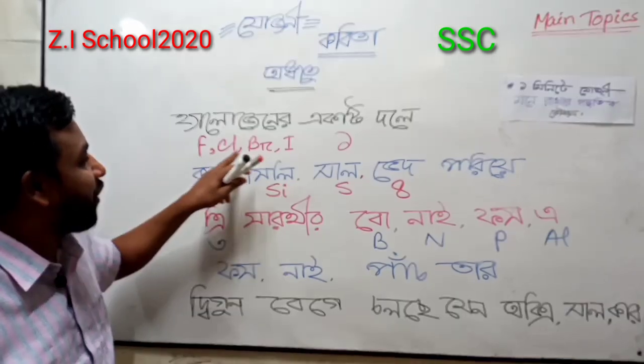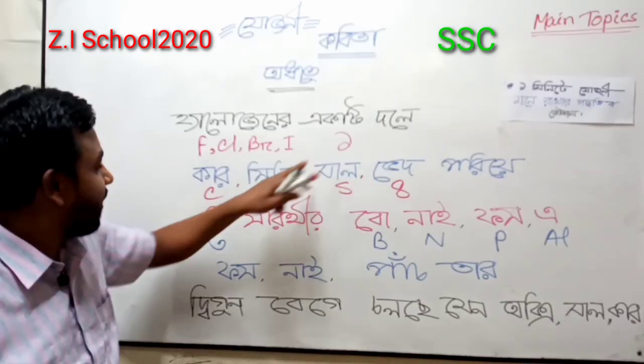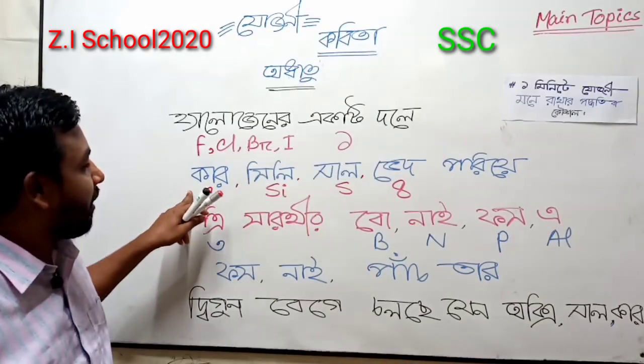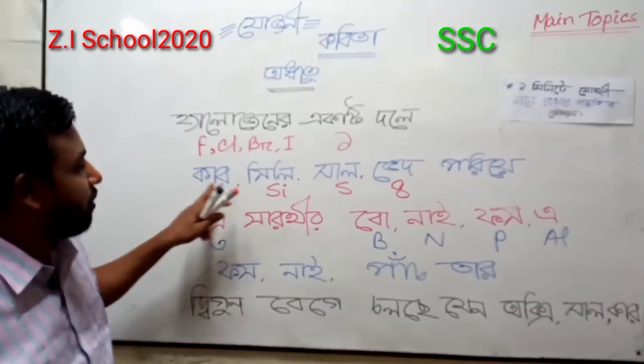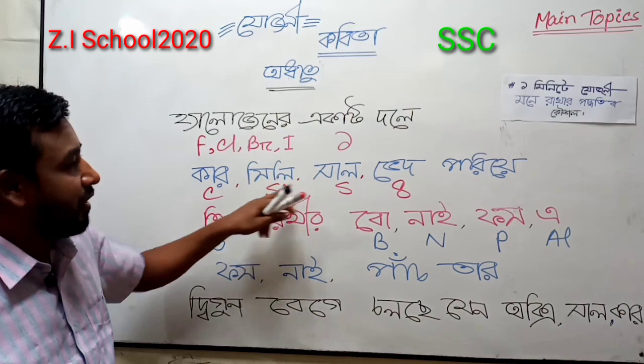Fluorine, chlorine, and bromine. Carbon, silicon, sulfur.